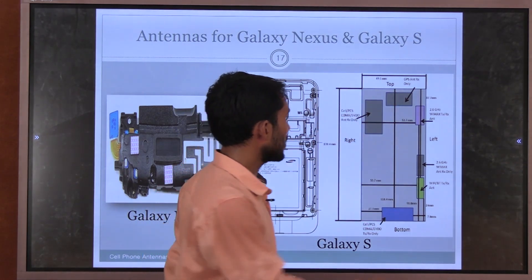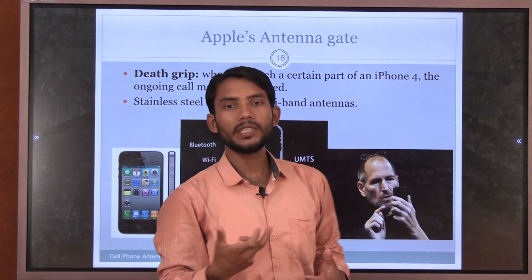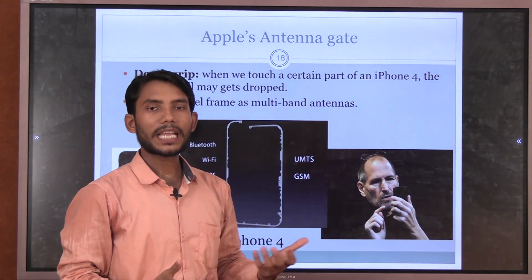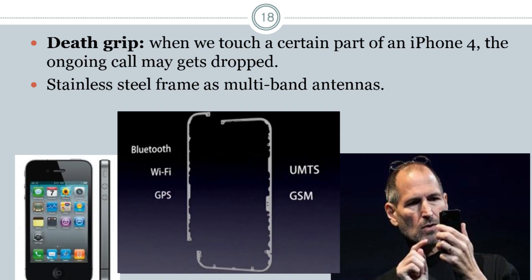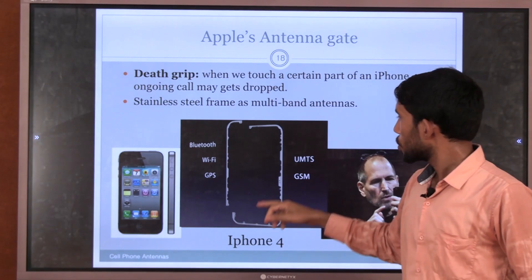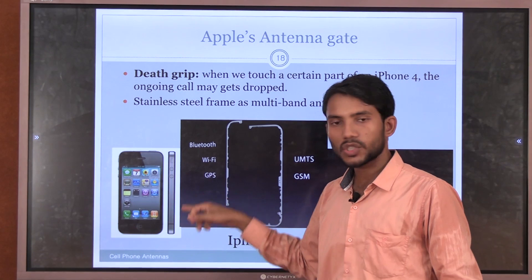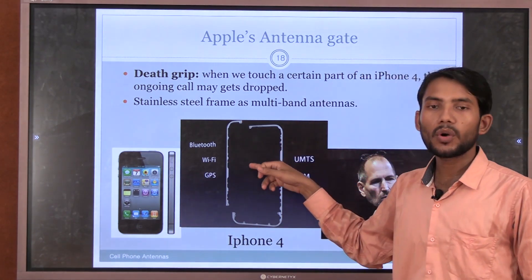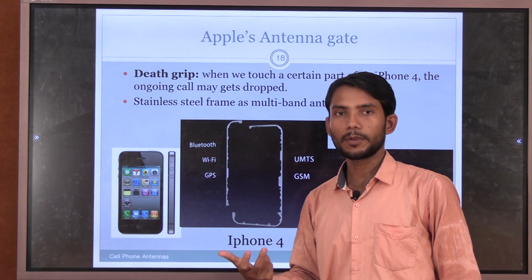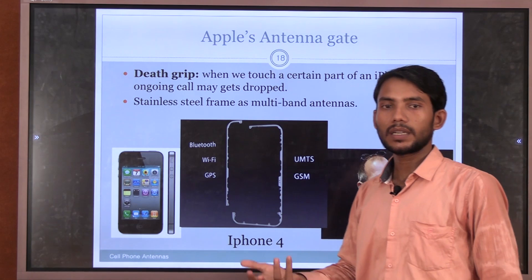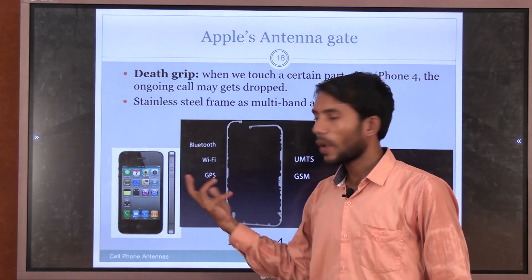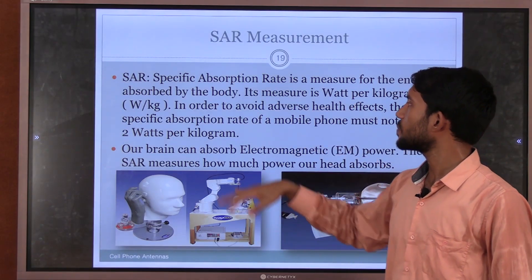Sometimes when you use a mobile phone, the signal may suddenly cut down. This problem arises because when you touch the outer portion of the Apple iPhone, the ongoing call may get dropped. The stainless steel frame acts as multiple antennas. So the outer stainless steel of the Apple iPhone may be used as an antenna, which is why sometimes calls get disconnected or noise occurs.